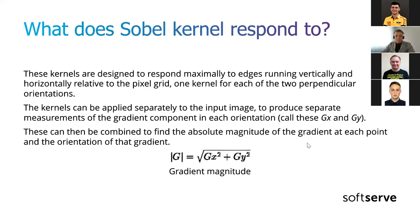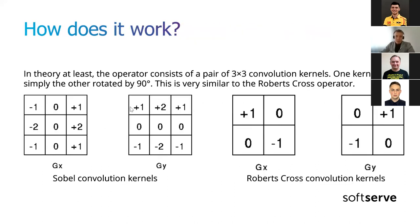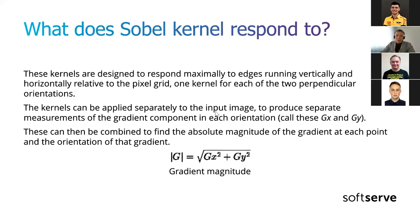There are some differences. Sobel kernels are designed to respond maximally to edges running vertically and horizontally relative to the pixel grid. As you can see, we have vertical responses and horizontal responses. They are applied to the input image separately, producing separate measurements of gradient components in each orientation — we'll call these Gx and Gy. We can combine these to find the absolute magnitude of the gradient at each point using this formula, which involves a square root — which is slow to calculate.